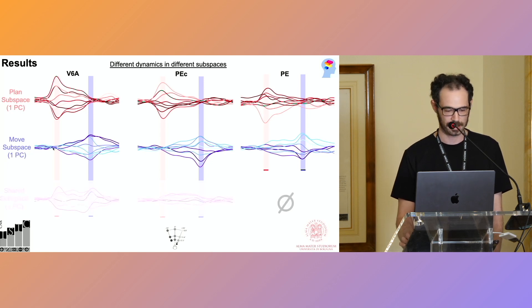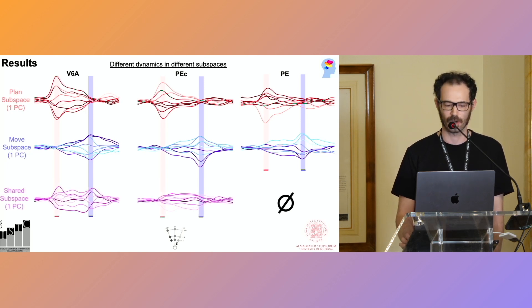Regarding the shared subspace, instead, we are able to find it only in V6A and PC, the visual motor areas, and not in PE. And here the dynamics are strong in both the two epochs.